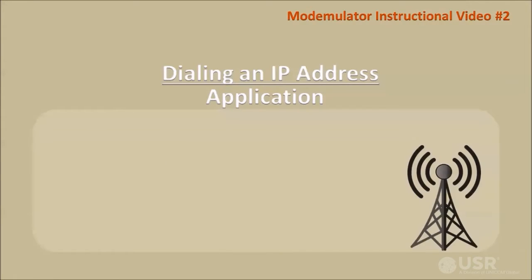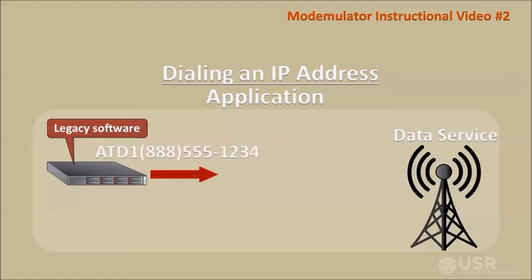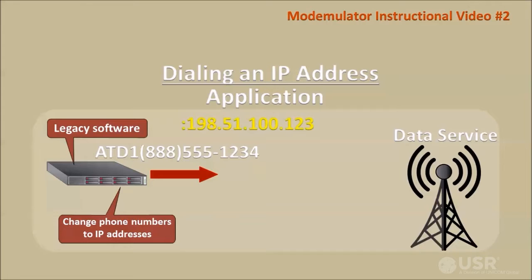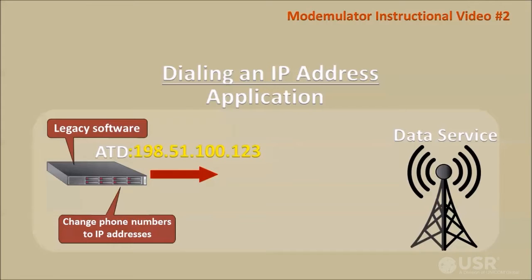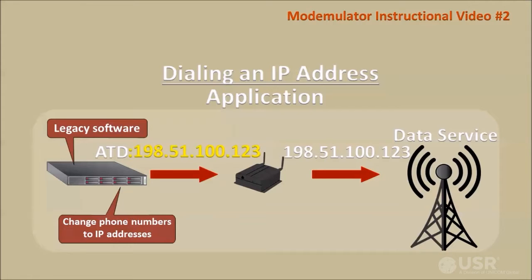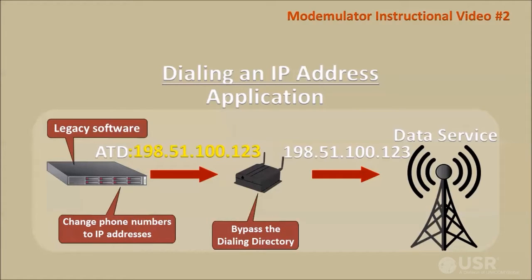Use the direct dial command for applications in which the dial command sent by the legacy software can be changed to send the direct dial command and an IP address instead of a phone number. The Modemulator will use the IP address from the direct dial command to connect through the cellular network to the destination port, bypassing the dialing directory.